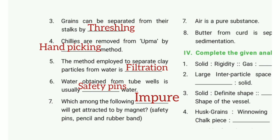Sixth one: water obtained from tube wells is usually what kind of water? The answer is impure water. Seventh one: which among the following will get attracted by a magnet? The answer is impure iron impurities.